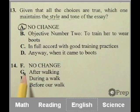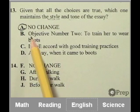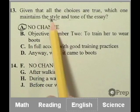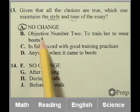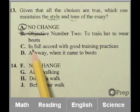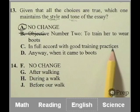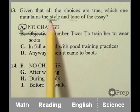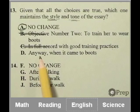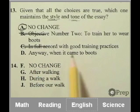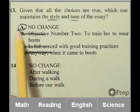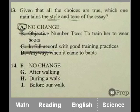Objective number two, to train her to wear boots. I don't think that's in keeping with the style and tone of the essay. That sounds very formal. So I get rid of B. In full accordance with good training practices. Again, this sounds way too formal. I don't think it's within the same style and tone of the original essay. And then D, anyway, when it came to boots, I would say that this sounds a little too informal. So I get rid of D. I'm going to stick with A and move on with confidence.